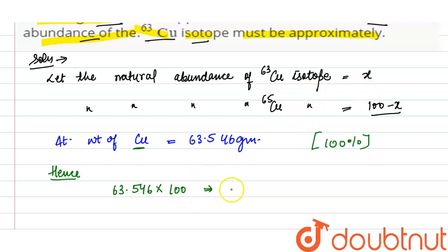So, it will be multiplied by 100 equals the product of atomic weight and abundance of their isotopes. So, abundance is X and its atomic weight is 63, plus copper-65 has abundance 100 minus X and its atomic weight is 65.